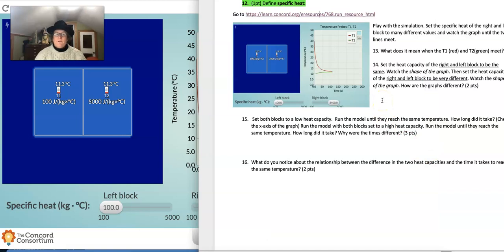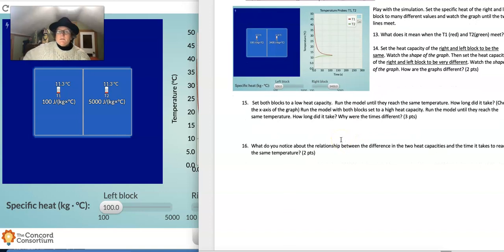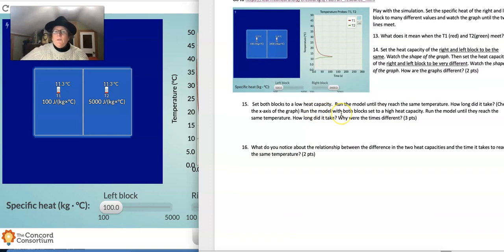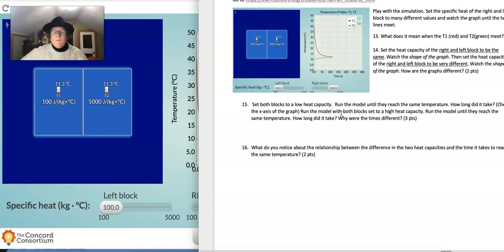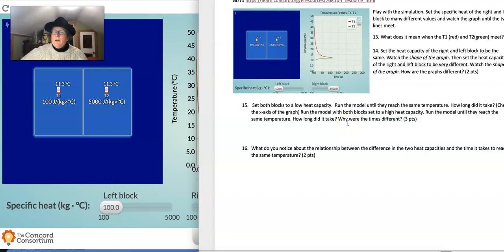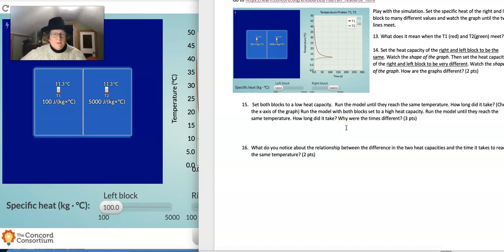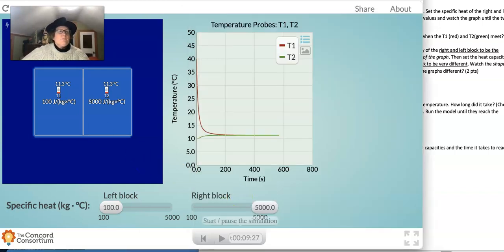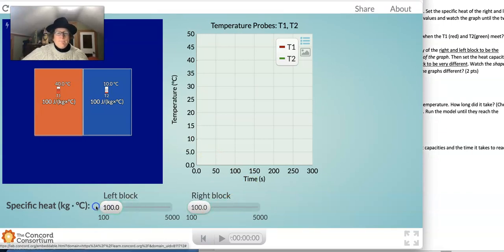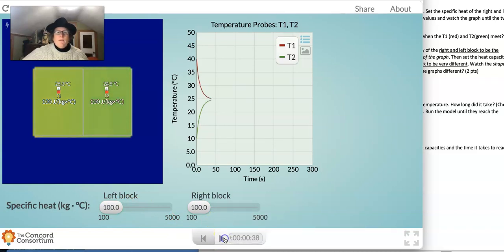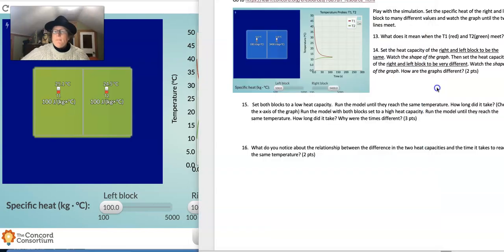So you should be able to answer question 14 now. Question 15 says set both blocks to a low heat capacity. Run the model until they reach the same temperature. How long did it take? And then run the model with both blocks set to a high heat capacity. Run the model until they reach the same temperature. How long did that take? And why were their times different? Well, I'll help you set this up. So if we set them, let's reset. We'll set them both really low. And we'll hit play. And boom. They hit about the same temperature in about, I think that's 38 seconds. So we'll say low heat capacity, 38 seconds at 100 kilograms times C.